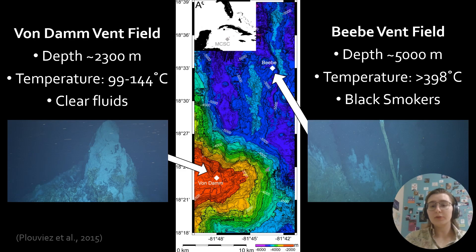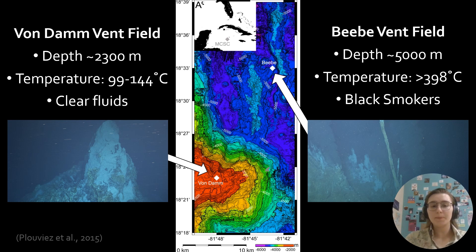The Von Damm Vent Field and the Beebe Vent Field, despite being geographically very close to each other, have very different chemical natures. The Von Damm Vent Field is significantly shallower and cooler than the Beebe Vent Field, which is currently the deepest known vent on Earth.